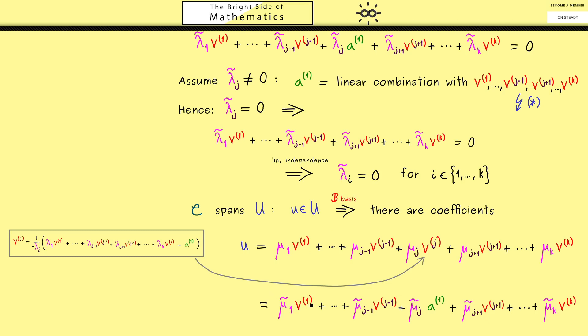So in conclusion, we have shown that C is also a basis. And that's the whole proof of Steinitz Exchange Lemma for the case that L is equal to 1.